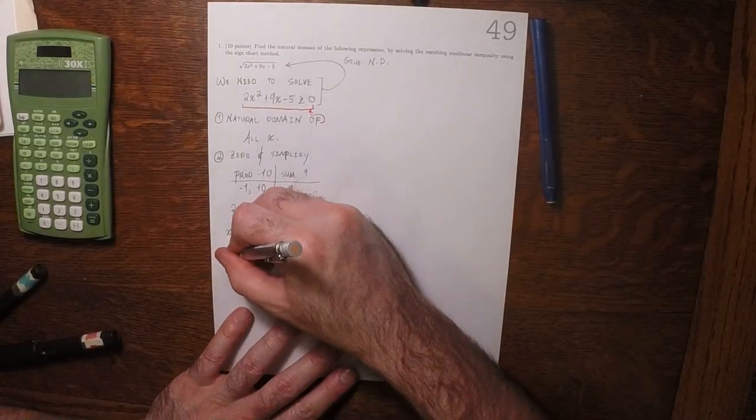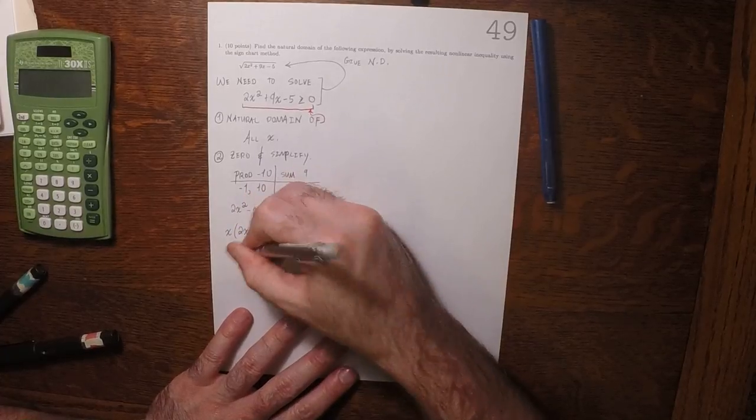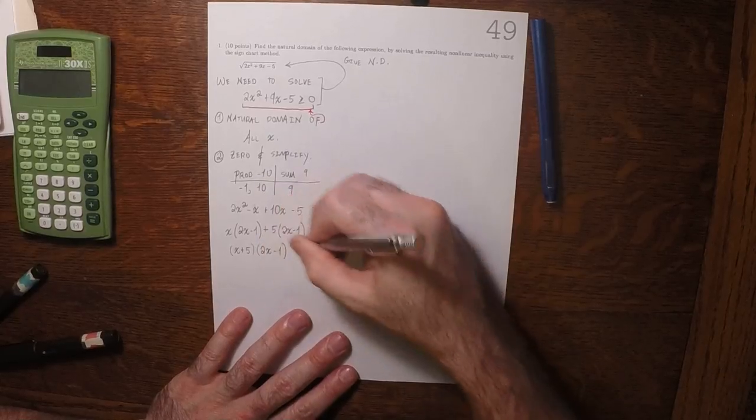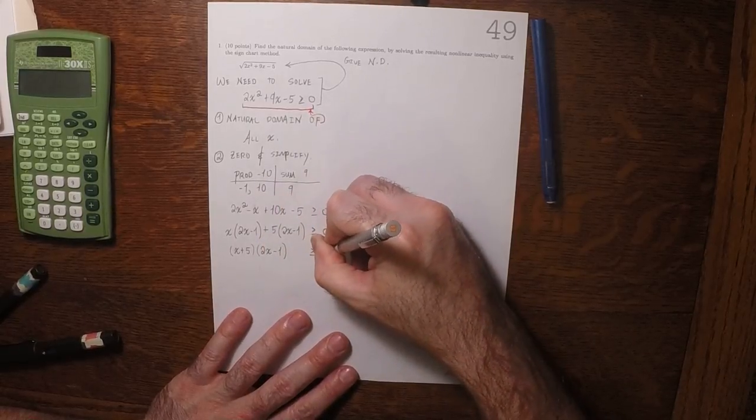So that would be x plus 5 multiplied by 2x minus 1 greater or equal to 0. So now it's zeroed and simplified.